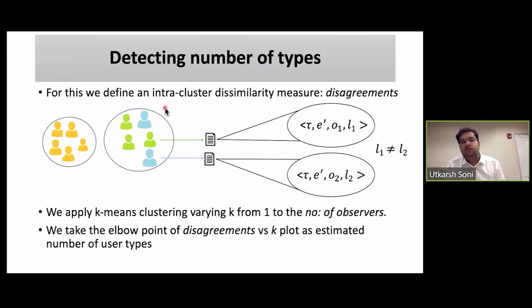Now, the next question is, how do we know what is the number of user types? For that, we define an intra-cluster dissimilarity measure called disagreement. It's a domain-specific measure which, given any clustering, is computed as follows. It is the number of instances where we take observers who have been put in the same cluster, but they disagree on the label of some transition while they have been provided the same set of explanatory messages. For that, we look into the original data that was collected from the observers, and these data points would have the original explanatory messages and original transition.